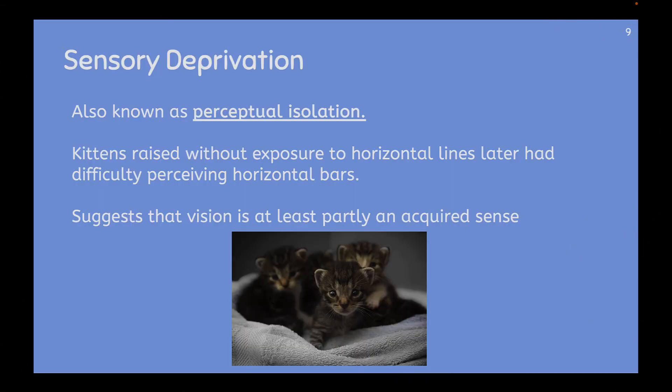Known as sensory deprivation, also known as perceptual isolation. For example, if kittens were raised without exposure to horizontal lines, they would later have difficulty perceiving horizontal bars. It suggests that vision is at least partly an acquired sense — something that we learn as we experience the world around us. Not everything is innately built into us, because all mammals have similar experiences in terms of the way that sensory information is stimulated into our five senses, and then we make perception out of it through our brain once the signal gets there.